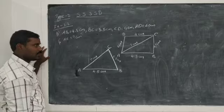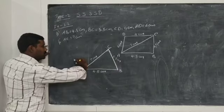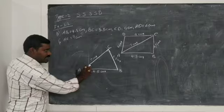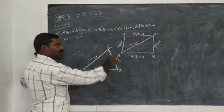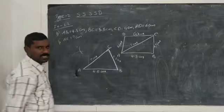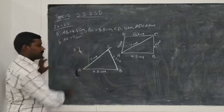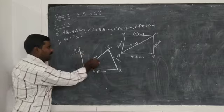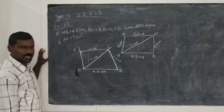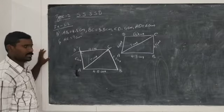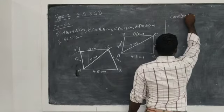Now take 6 centimeters radius with center A and draw one arc. Then with 4 centimeters radius and center C, draw one more arc to cut the first arc. The intersection point of these two arcs is D. Now join AD and CD with the help of the scale and write their measurements: CD equal to 4 centimeters and AD equal to 6 centimeters.